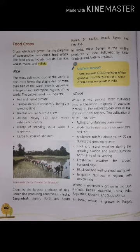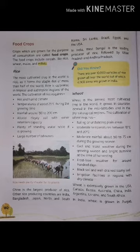Wheat is the second most cultivated crop in the world. It grows in countries located in the mid-latitudes in the dry subtropical regions. The cultivation of wheat requires rolling or undulating plain areas, moderate temperatures between 10 degrees Celsius and 20 degrees Celsius.